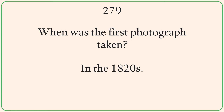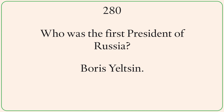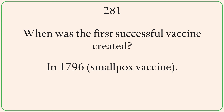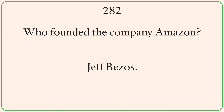When was the first photograph taken? In the 1820s. Who was the first President of Russia? Boris Yeltsin. When was the first successful vaccine created? In 1796 — the smallpox vaccine. Who founded the company Amazon? Jeff Bezos.